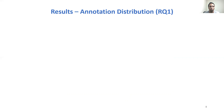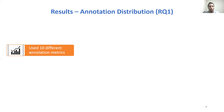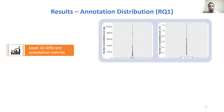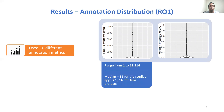For the first research question on annotation distribution, we used 10 different annotation metrics from prior work on Java annotations. For example, for number of annotations per app, we found it ranges from 1 to over 11,000 in the studied apps, with a median value of 86 — much less than the median of 1,707 for general Java projects.